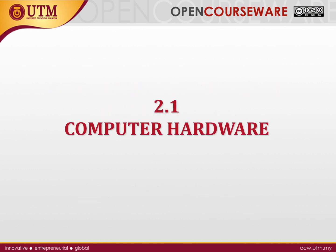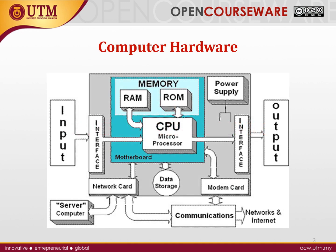First, let us discuss computer hardware — what do we actually mean by computer hardware. Computer hardware is any part that we can touch and see. We have input, we have output, and we have the processing hardware. For example, we have the input that we deal with like the interface.